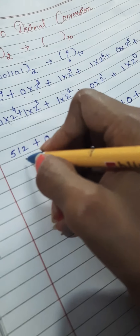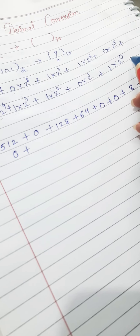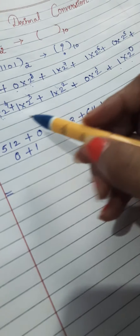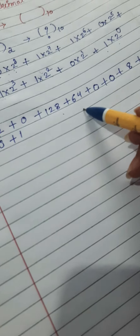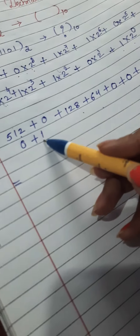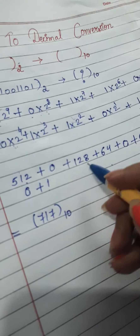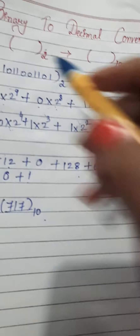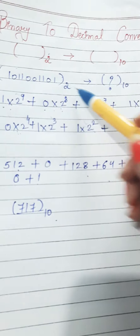Then 2 to the power 2 is 4. Then 2 to the power 1 multiplied by 0 becomes 0. Then 2 to the power 0 is always 1, so 1 times 1 equals 1. So we add the numbers: 512, 128, 64, 8, 4, and 1. After adding these numbers, we get 717 base 10. So this is the binary to decimal conversion.